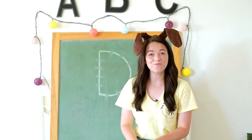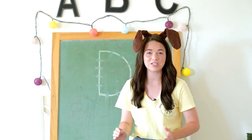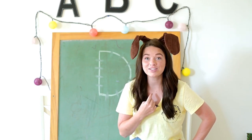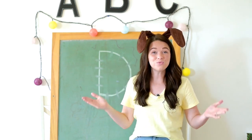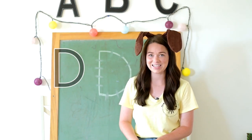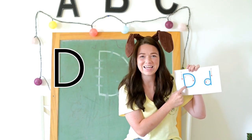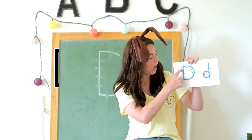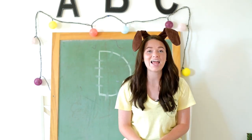Wasn't that so fun to meet Duke the dog? He is so cute. Do you remember what letter D — dog starts with? That's right, it's a D. Let's trace the D together: down, up, curve D. Can you say it with me? Down, up, curve D. Now let's be dogs like Duke.